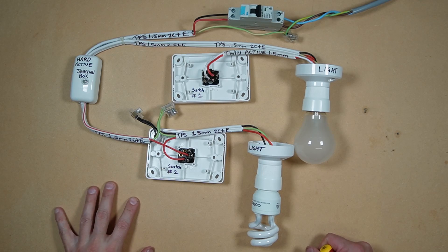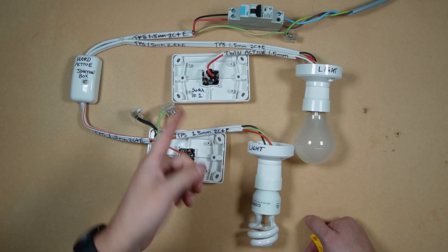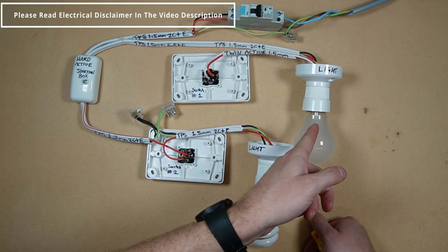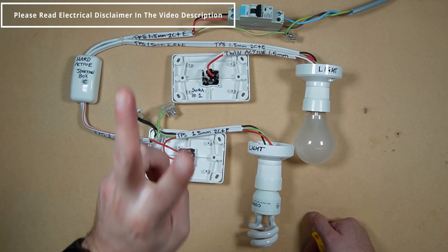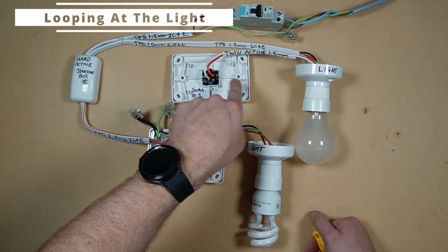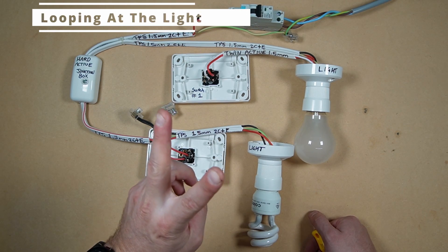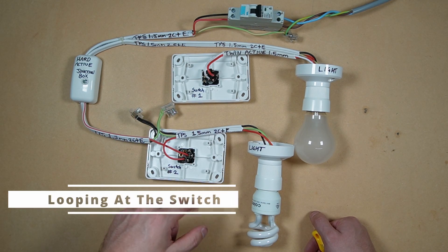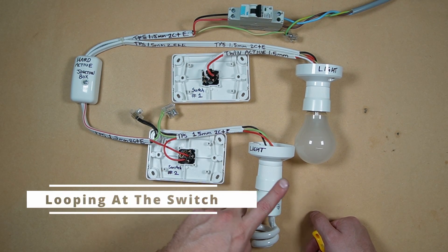Hey guys, this is just a video explaining how a single switch controls a single light. There's two ways to do it. The first way is looping at the light, which is the top switch and top light. The second way is looping at the switch, which is the bottom switch and the bottom light.